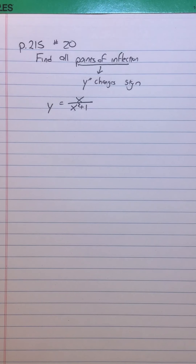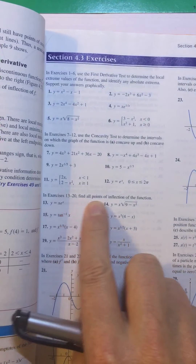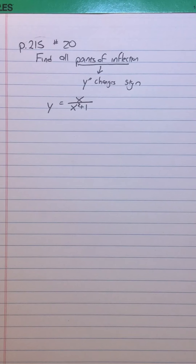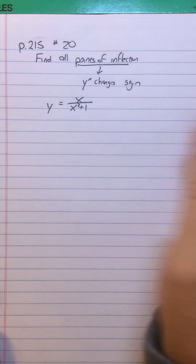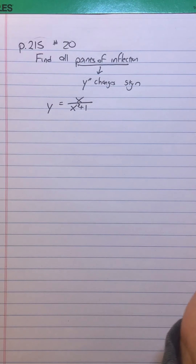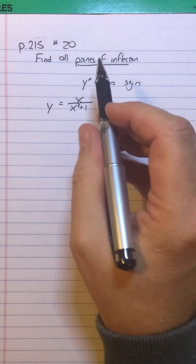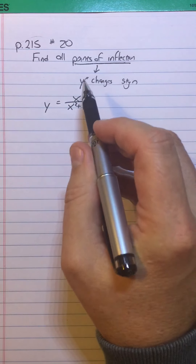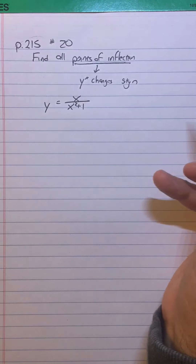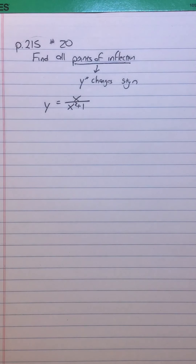At page 215, number 20, we have a little bit different direction. It says find all points of inflection. A point of inflection means concavity changes. Concavity follows the sign of Y double prime. So anytime you are asked to find points of inflection, as you will be on the AP exam and elsewhere, that tells you to look for where Y double prime changes sign. Here's our Y for number 20.